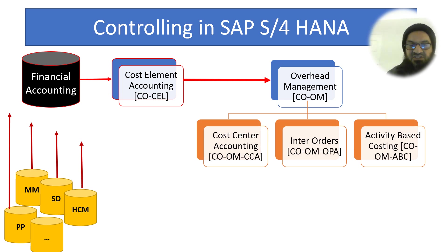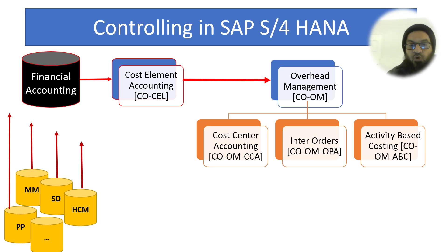From Cost Element Accounting, various expenses flow through the other Controlling sub-modules: Cost Center Accounting, which is department-wise budgeting and costing; Activity Based Costing, which is activity-wise budgeting and costing; and Internal Orders, which are event-based cost centers — a sort of sub-cost center for specific events.